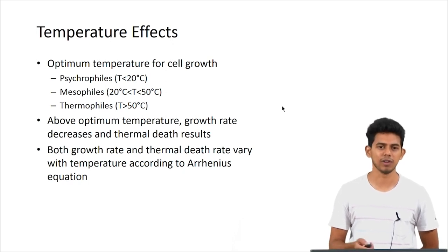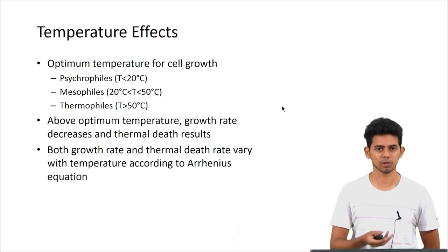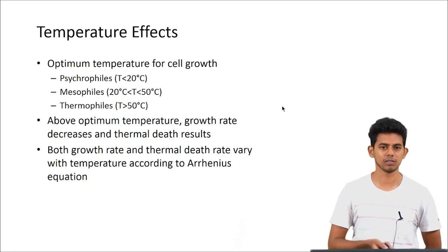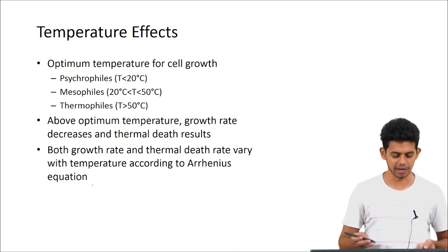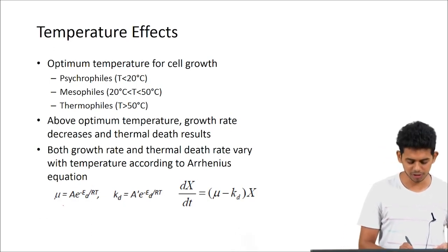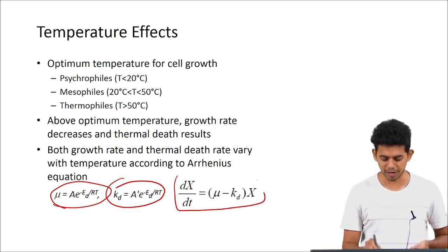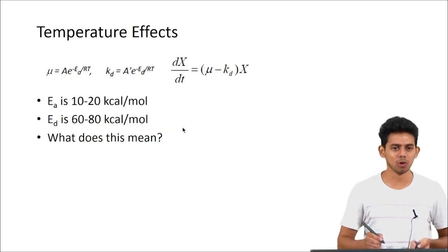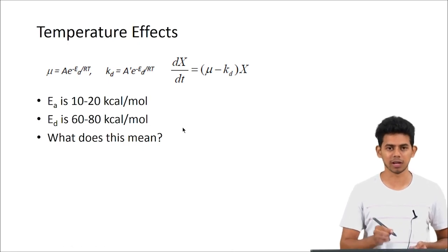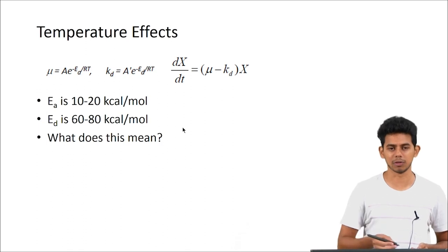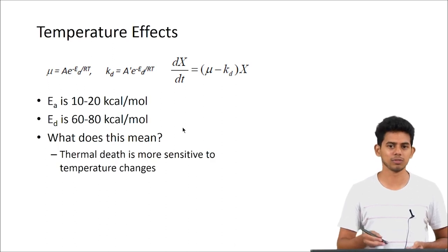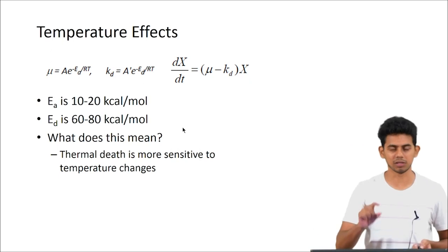Temperature effects - the optimum temperature required by the cells can vary based on the cell type. They are divided into three classes based on their required temperature: psychrophiles which require temperatures below 20 degrees Celsius, mesophiles which require a temperature range of 20 to 50 degrees Celsius, and thermophiles which require high temperature greater than 50 degrees Celsius. Above this optimum temperature, growth rate decreases and thermal death results. The effect of temperature can be shown by the Arrhenius equation, which shows the growth rate constant and the death rate constant. Using these, we can calculate the rate of cell concentration with respect to time. The activation energy for growth is usually around 10 to 20 kilocalories per mole and of death is around 60 to 80 kilocalories per mole. From this we can see that thermal death is more sensitive to temperature changes. Having the right temperature range is quite important.